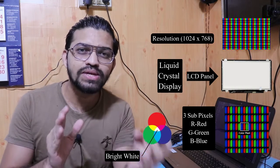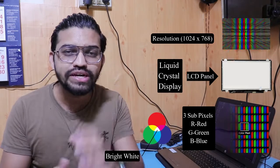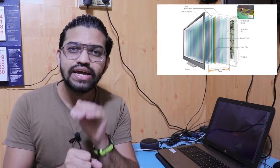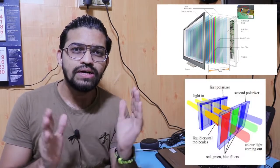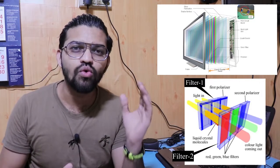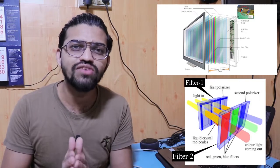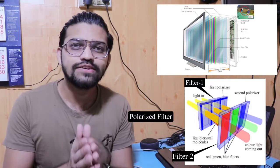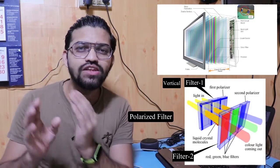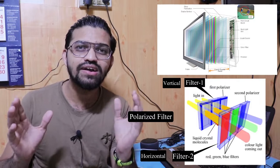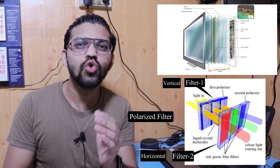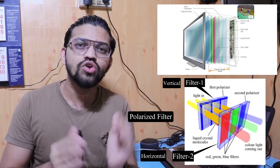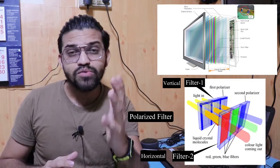Going into more detail, each pixel contains a liquid crystal panel. There are two filters arranged around it — a vertical filter and a horizontal filter. These are polarized filters: a vertical polarized filter and a horizontal polarized filter. They have a coating of thin glass sheets on them.